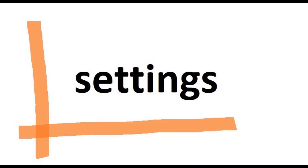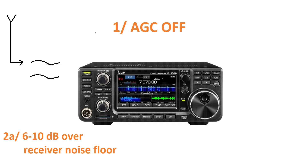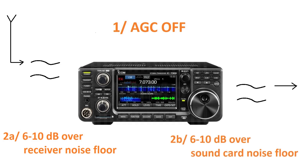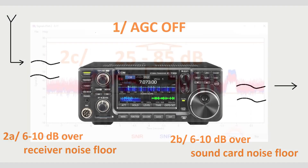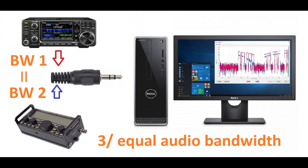Now the information about the most important settings. First: automatic gain control in both receivers has to be off. This is necessary to preserve linearity and to avoid pumping of the noise. The second condition deals with the required noise and signal level. The noise from the antenna should be at least 6 to 10 dB higher than the receiver's own noise. The audio noise fed to the sound card is to be at least 6 to 10 dB higher than the sound card's own noise. Both the noise and signal should be in the range of 25 to 85 dB. I have realized that the noise plotted in red in the earlier example was three decibels short of meeting this condition.